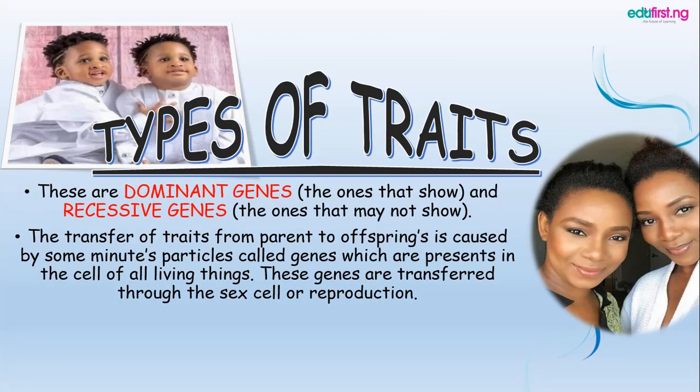We talk about the dominant genes and the recessive genes. The dominant genes are those genes that are physically seen. For instance, you can trace a mom with a daughter facially — maybe with a long hair, shape of nose, etc. The recessive genes are mostly the ones that don't show. Basically, if a child needs blood and you want to go to the parents, you can easily trace it from either the dad or the mom.